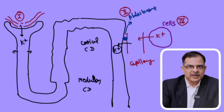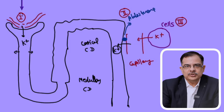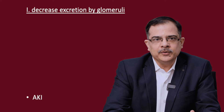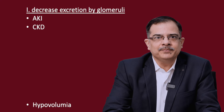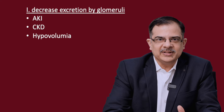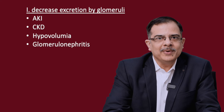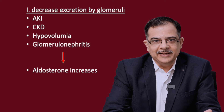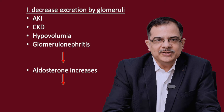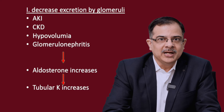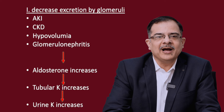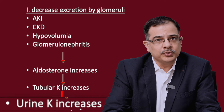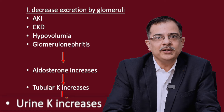These are the three main mechanisms of hyperkalemia. Let's see their etiology one by one. The number one cause is decreased potassium excretion via glomeruli. These causes include acute kidney injury where GFR is less so potassium excretion will be less, chronic kidney disease with the same mechanism, hypovolemia where glomerular filtration is reduced, and glomerulonephritis. In all these causes, aldosterone level will increase secondarily, leading to more tubular potassium excretion. As a result, urinary potassium will be high in all these conditions.